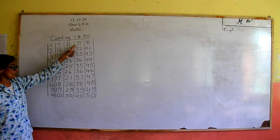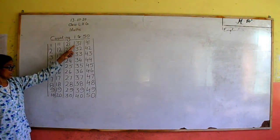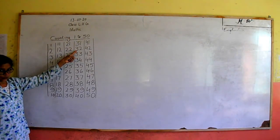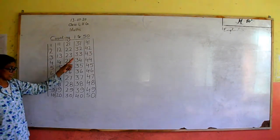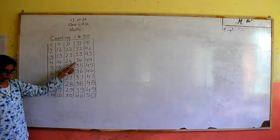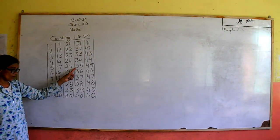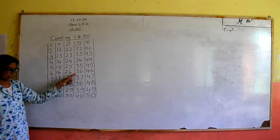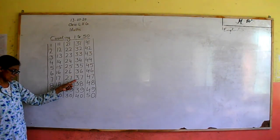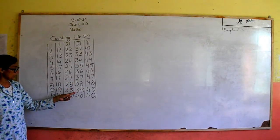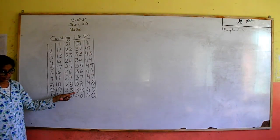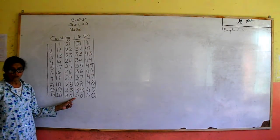Three, one — thirty-one. Three, two — thirty-two. Three, three — thirty-three. Three, four — thirty-four. Three, five — thirty-five. Three, six — thirty-six. Three, seven — thirty-seven. Three, eight — thirty-eight. Three, nine — thirty-nine. Four, zero — forty.